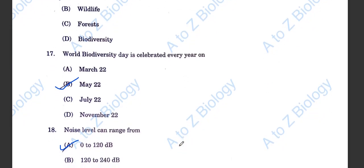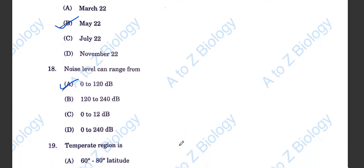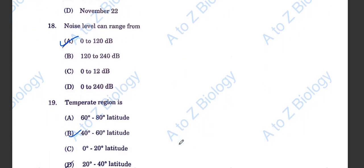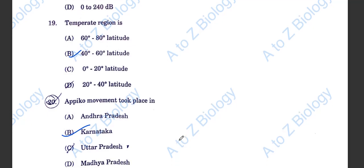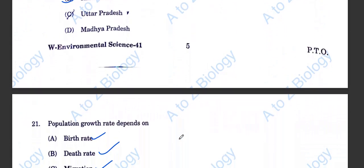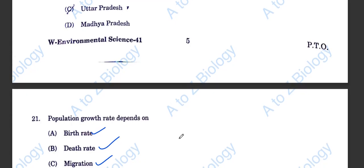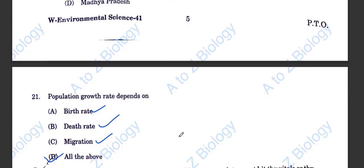World Biodiversity Day is celebrated every year on May 22. Noise level can range from 0 to 120 dB. Temperate region is 40 to 60 degree latitude. Epico movement took place in Karnataka. Question number 21. Population growth rate depends on birth rate, death rate, and migration. Hence the answer is all of the above.